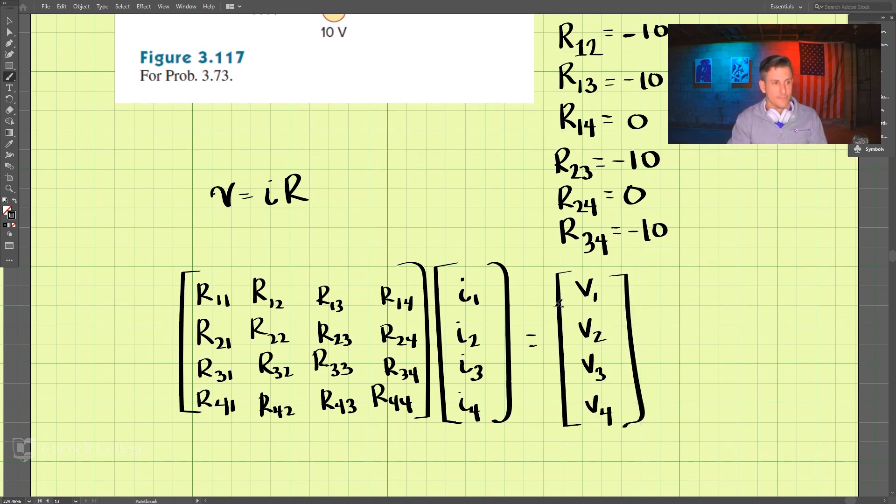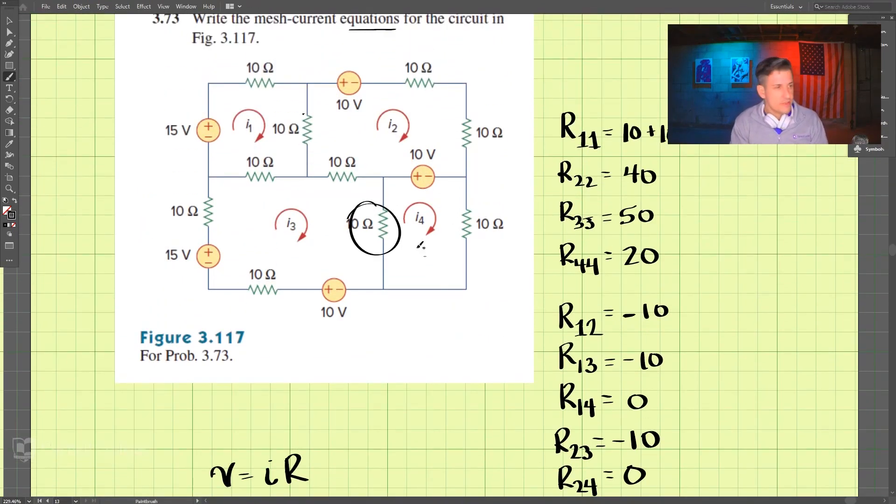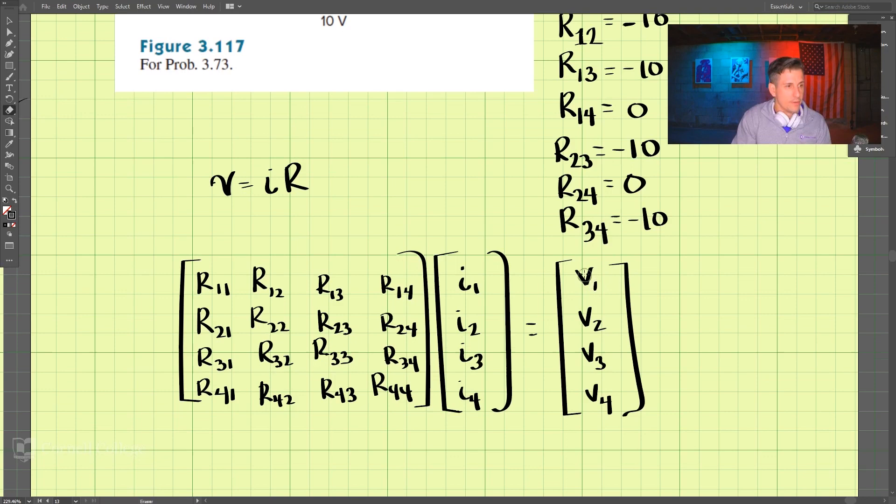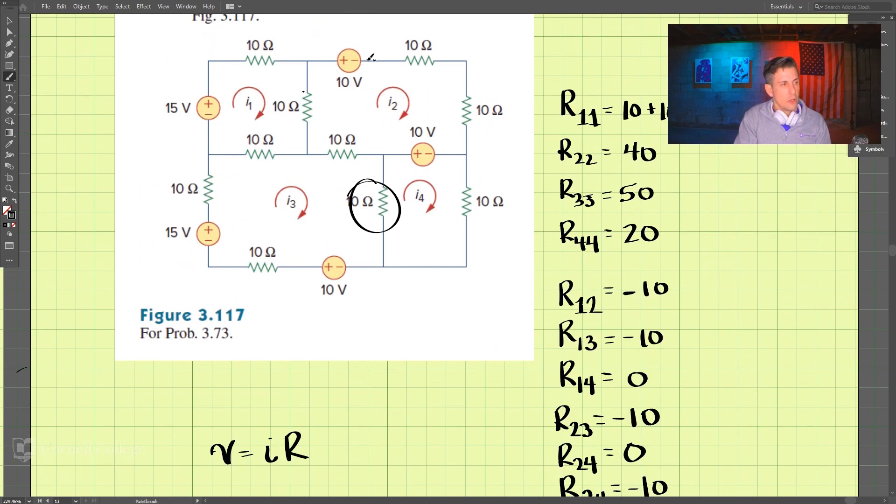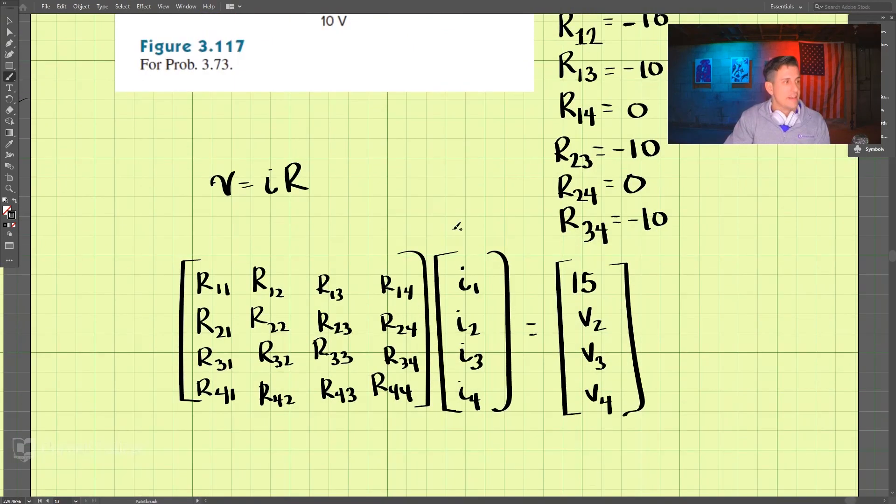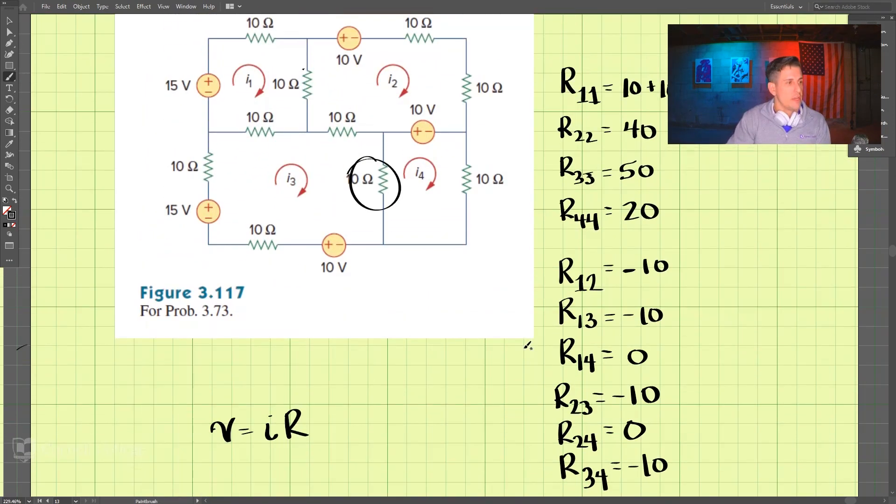Okay, V equals IR. So if we take a look at this here, V1, V2, we put in, we have if we go around V1, it is positive 10 and negative 10, so 10 minus 10 is 0, so that is 0 here, 0. And V2, 0.